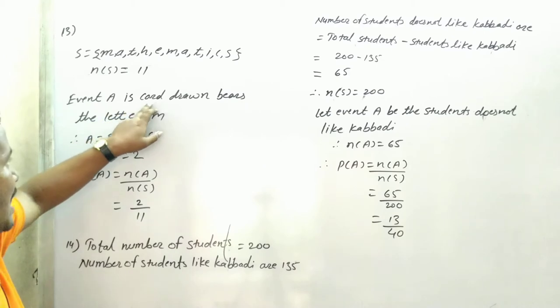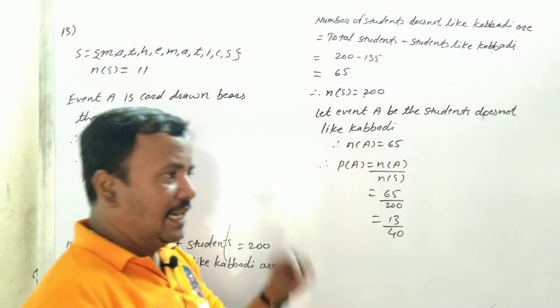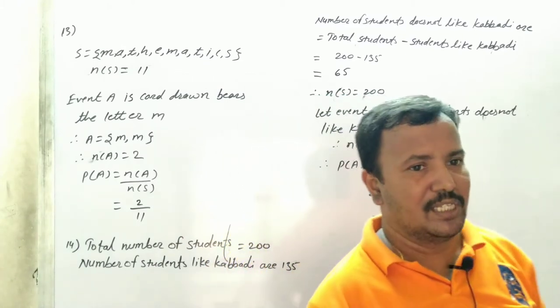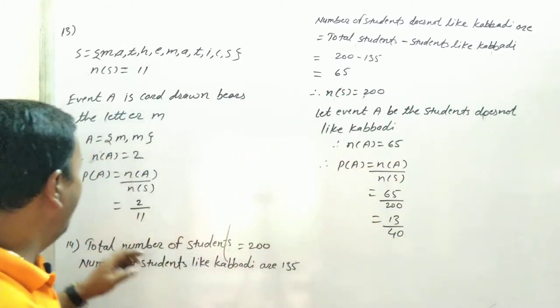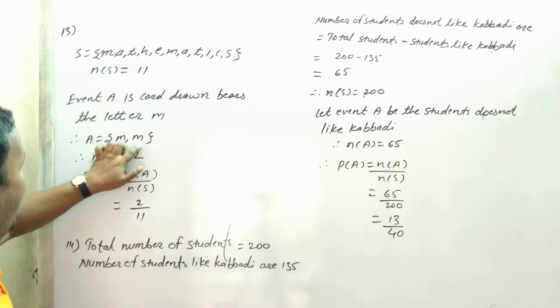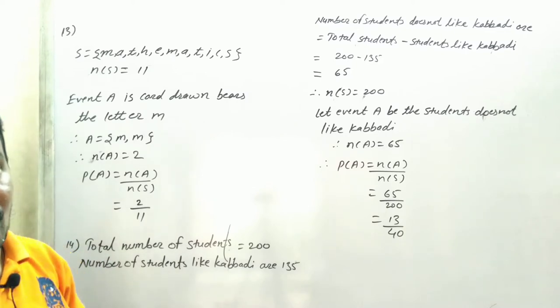Event A is the card drawn bears the letter M. Which card is connected? Which alphabet is M? Let A is equal to M, M. Two times, here is M, here is M.